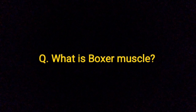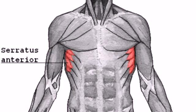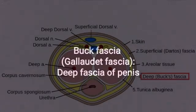What is the boxer muscle? Serratus anterior. What is Buck's fascia? Colles' fascia, or Buck's fascia, is the deep fascia of the penis.